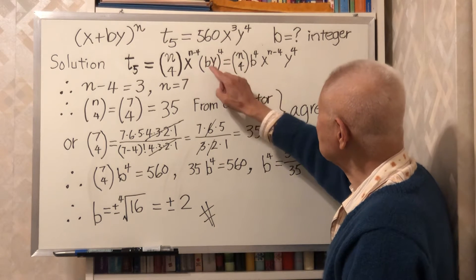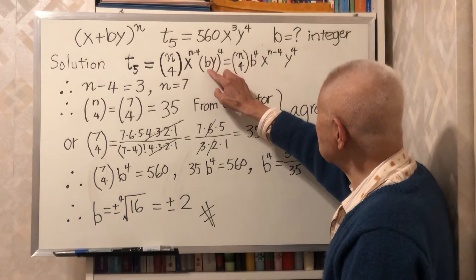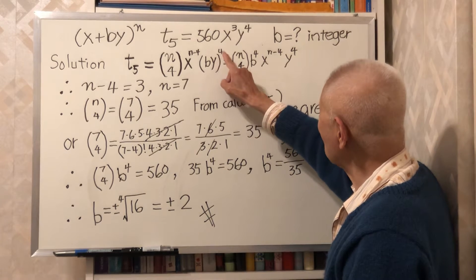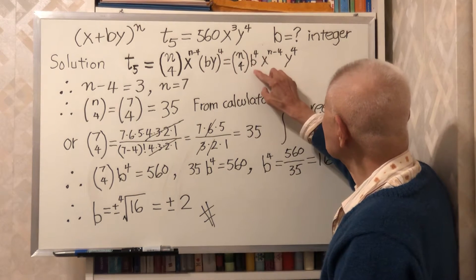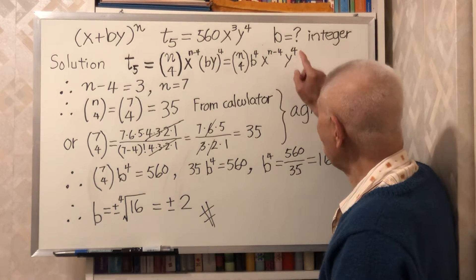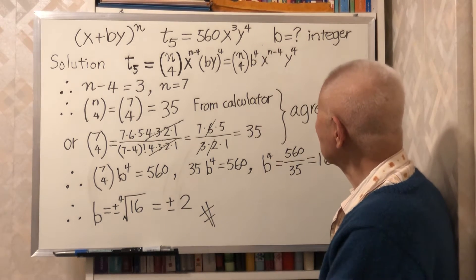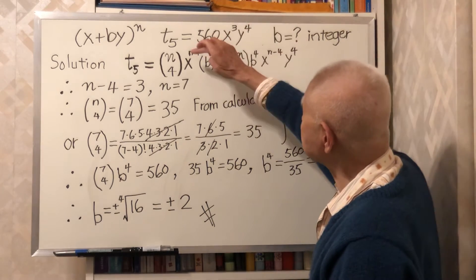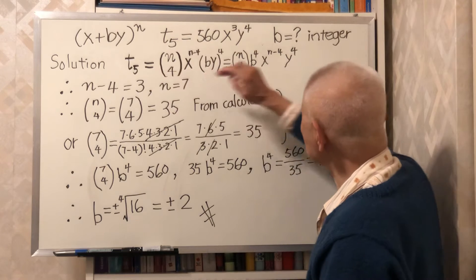Expand this bracket. b goes to power 4, y goes to power 4. So b^4 times y^4.